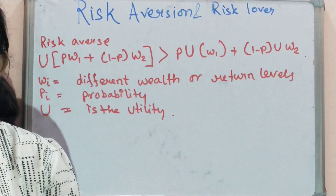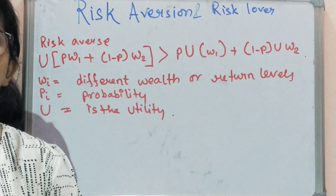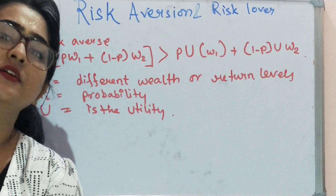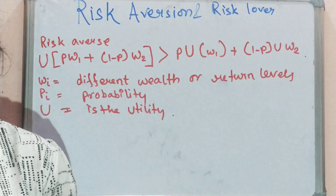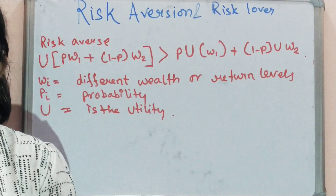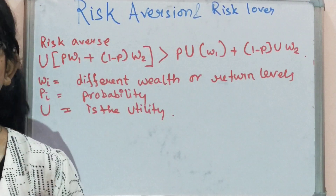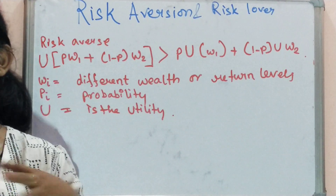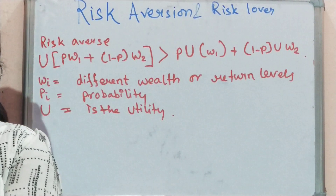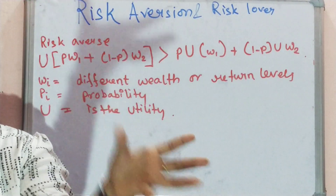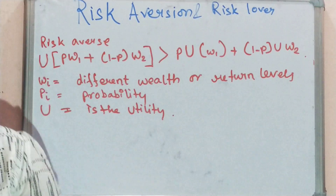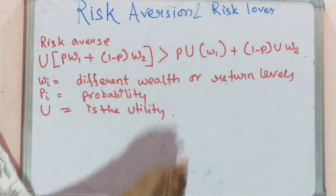Hey guys, in the last video I discussed about revealed preference. I hope you have seen that video, and if you haven't, do watch that video first. In revealed preference, I showed you what it actually is: in a particular budget, suppose there are two bundles and both can be purchased. If one bundle is actually purchased, then the other bundle is said to be revealed preferred. Now you can see on the board what today's topic is.